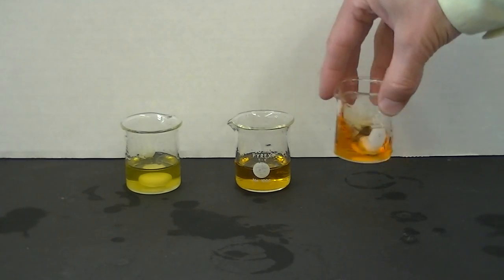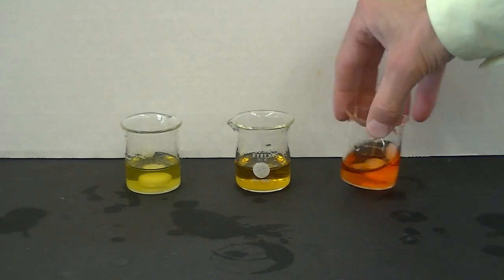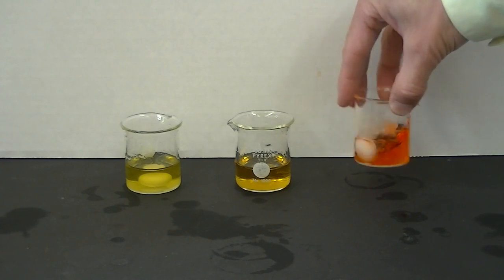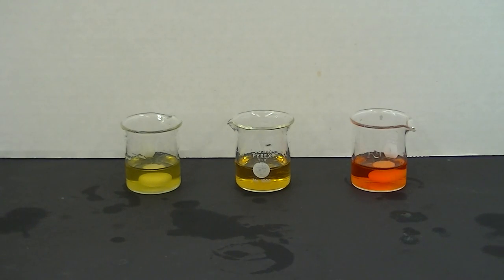We try the same thing with the strawberry Mentos that's been disguised, and the citric acid in the strawberry Mentos will change the indicator to a red color indicating an acid.